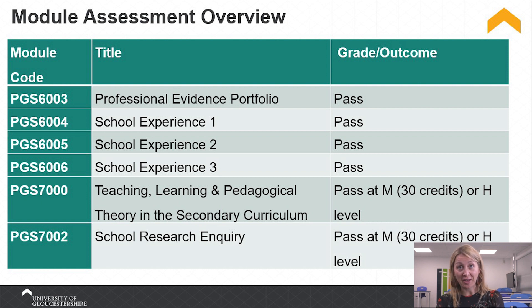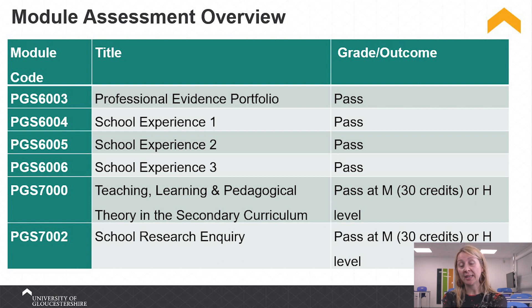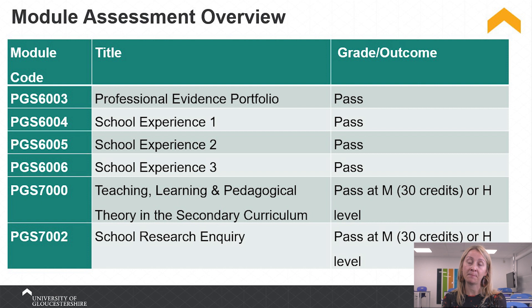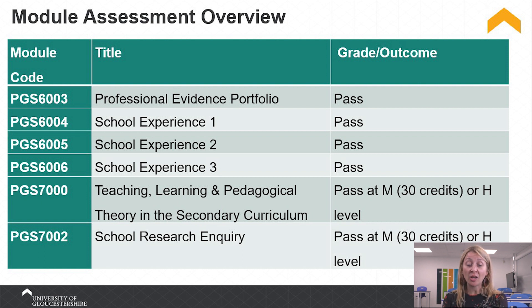The final assignment is my favourite — the school research inquiry, again at masters level. It is centred on your school experience three, where you look at the school improvement plan, choose a priority, and do a very small scale research project to see if you can make an actual impact on that priority. This module is split into a presentation and a written report, and we strongly encourage you to share your findings with your placement school, which they absolutely love and appreciate.